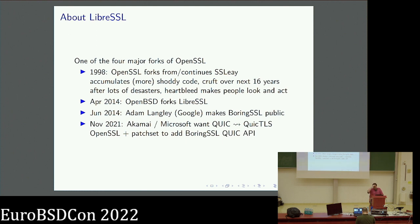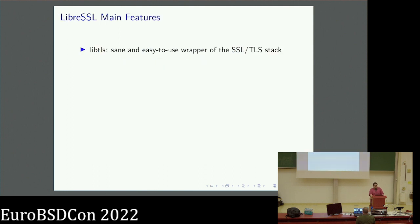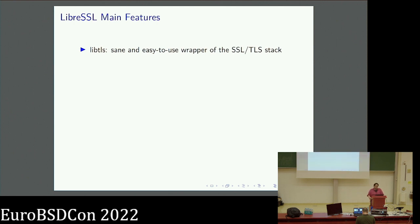BoringSSL is in wide use despite there being no API guarantees — it is used by Google itself. Various projects embed BoringSSL, and for instance the crypto support in the Swift language is also based on BoringSSL. LibreSSL's main features: the crown jewels are LibTLS and its API. It's basically a sane wrapper, easy to use, around the SSL API from LibSSL. It is used throughout OpenBSD in all things speaking TLS. It's tremendously easy to use, tremendously hard to misuse, and it just works.